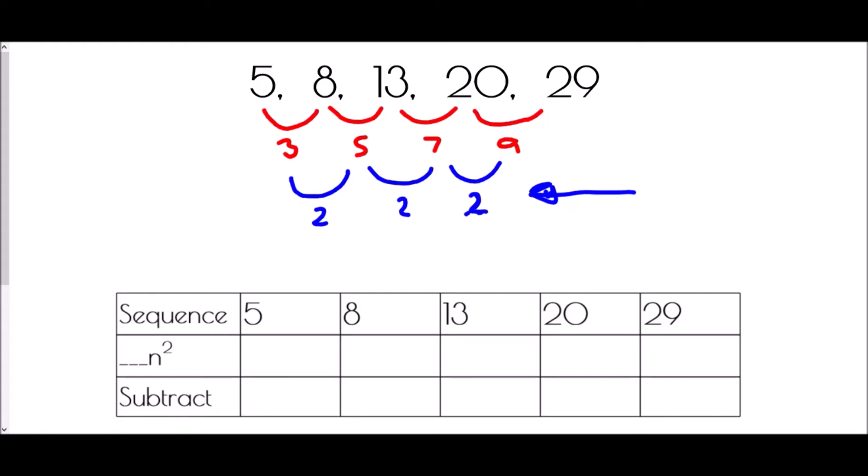This second level difference is also a very important feature of the nth term. The reason it is important is that this number tells us how many n squared the sequence is based on. What we need to do is half the second level difference. Half of two is one, and so we are dealing with one n squared.